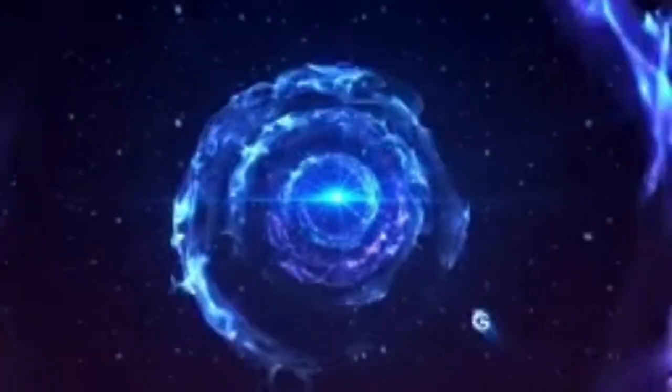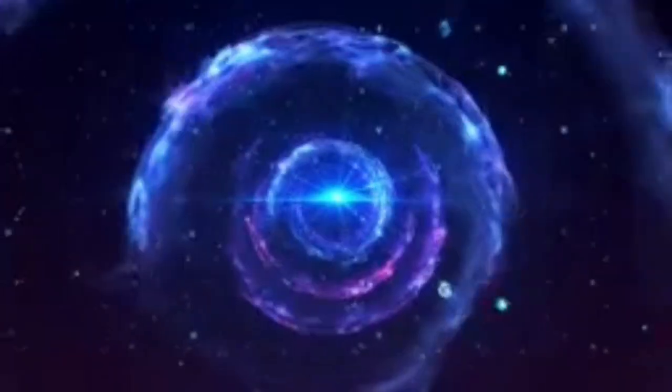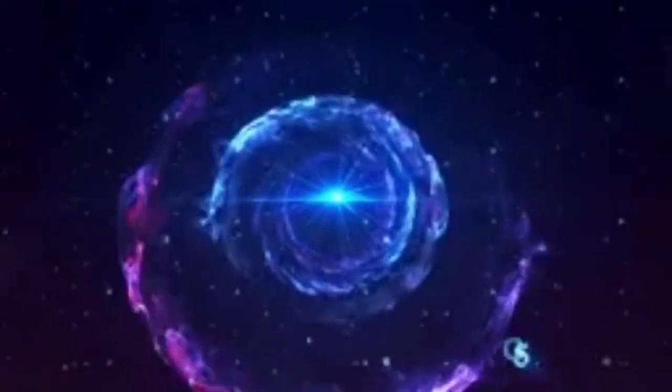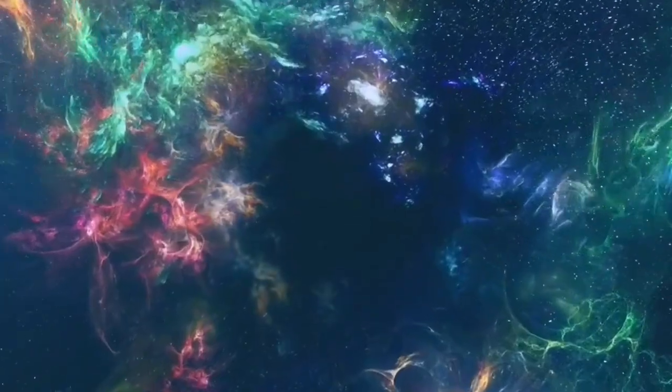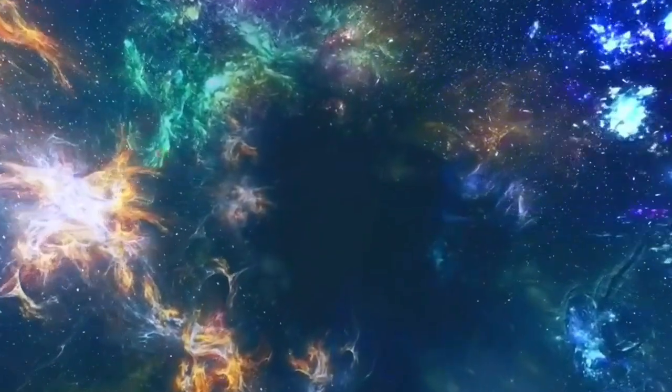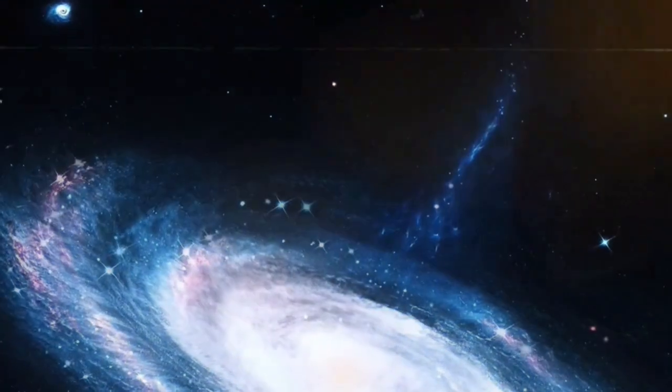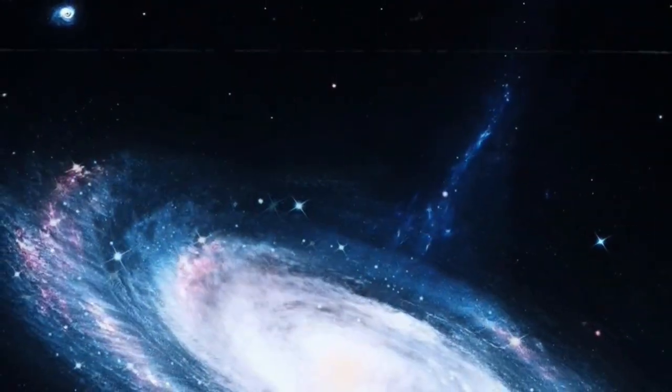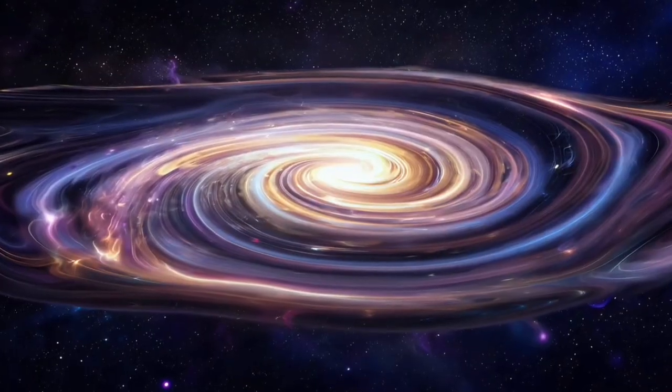This period, known as the Cosmic Dawn, happened around 200 to 300 million years after the Big Bang, marking the moment when the first stars and galaxies began to form. The process by which this unfolded remains a subject of perfect investigation, with hypotheses ranging from the effects of dark matter and dark energy to the interactions between star-forming gas and dust.